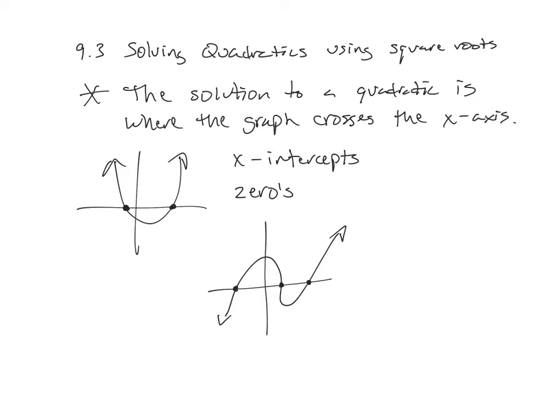We've actually done solving before — find the zeros. We did this in Chapter 8; it was called finding the zeros or finding the x-intercepts. So just to point out the different ways to solve a quadratic: you can solve by graphing, which is Section 9.2, but we've done a ton of graphing so we're skipping that. It's also the least reliable because if it doesn't cross at a whole number, there's no way to tell what the answer is.